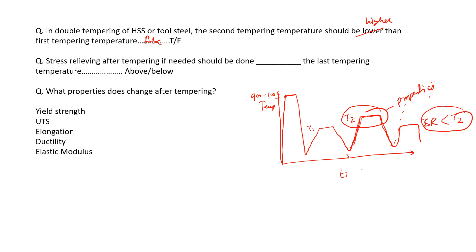What properties change after tempering? Yield strength changes, UTS changes, elongation increases, and ductility improves. However, the elastic modulus does not change — elastic modulus is a material property and remains the same regardless of tempering.